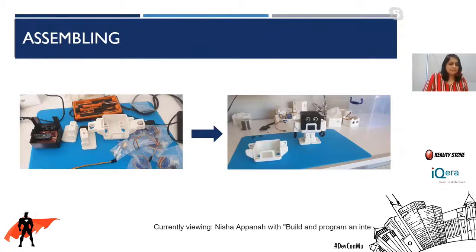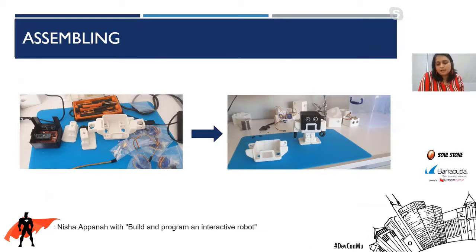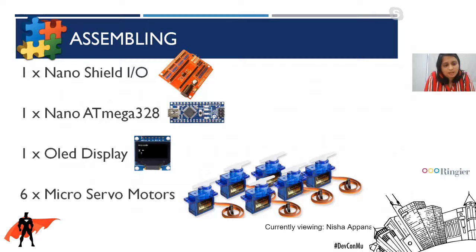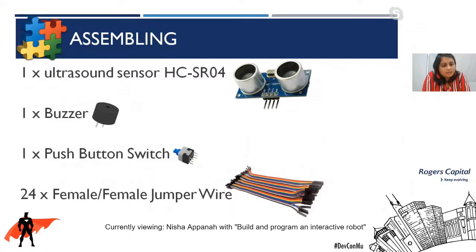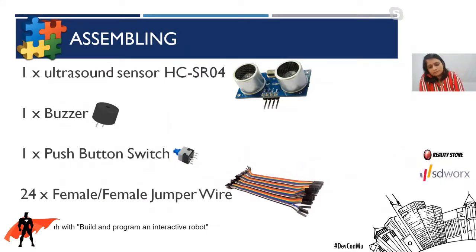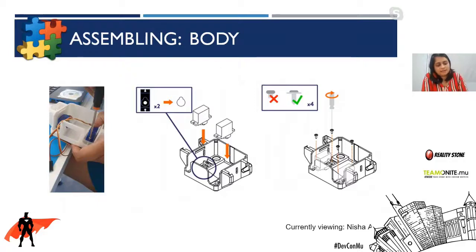Next is the assembling. Now that you've printed all your parts, we have to assemble the little Otto, which is on the right of the screen. When you assemble Otto you'll need some components: the shield, the Arduino Nano, the OLED display, and six servo motors. You also need an ultrasound sensor, a buzzer for sound, a switch, and 24 female-to-female wires. The first step is putting the two servo motors inside — on the left-hand side and the right-hand side of the body. The instructions are on the right so you can see how it goes in.